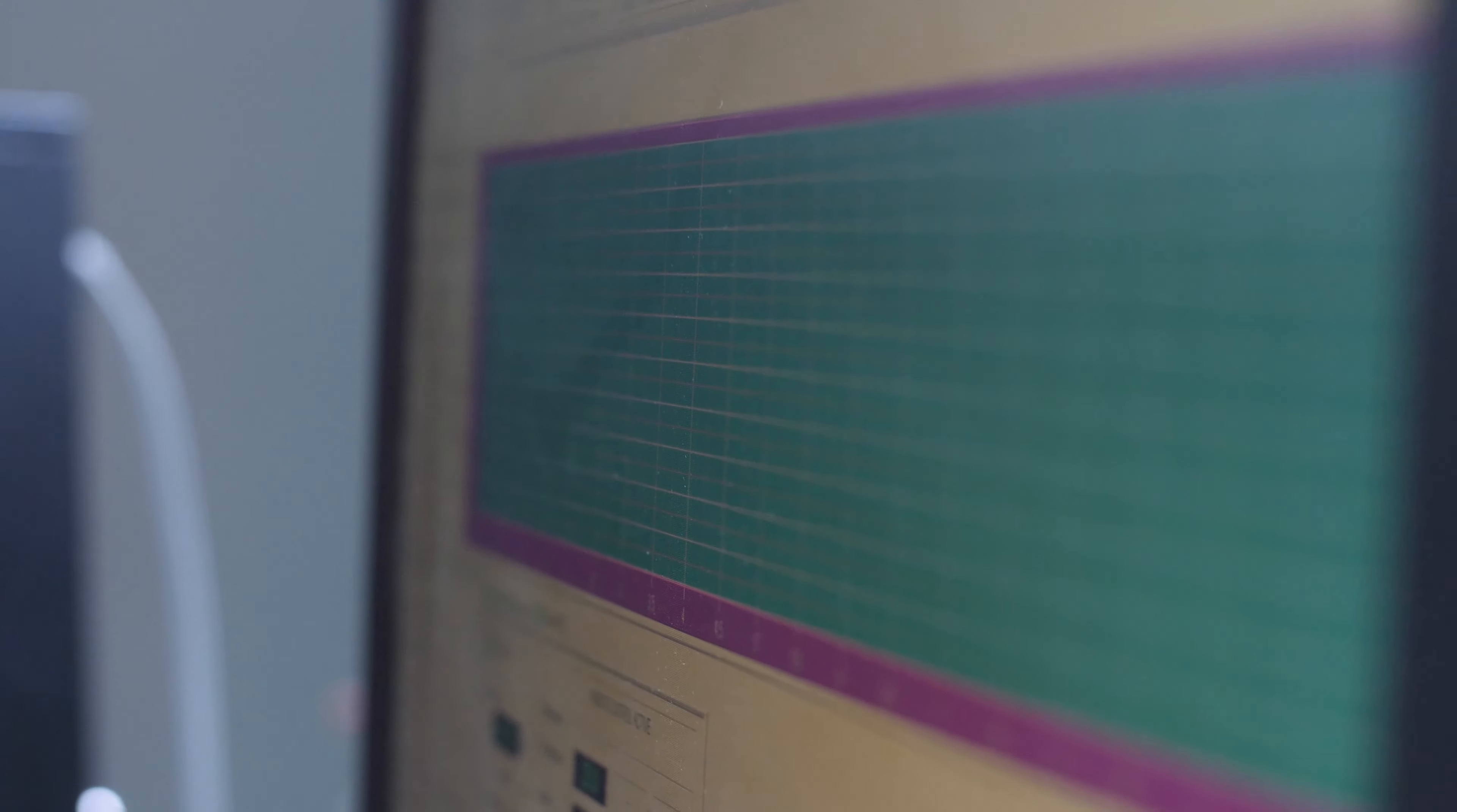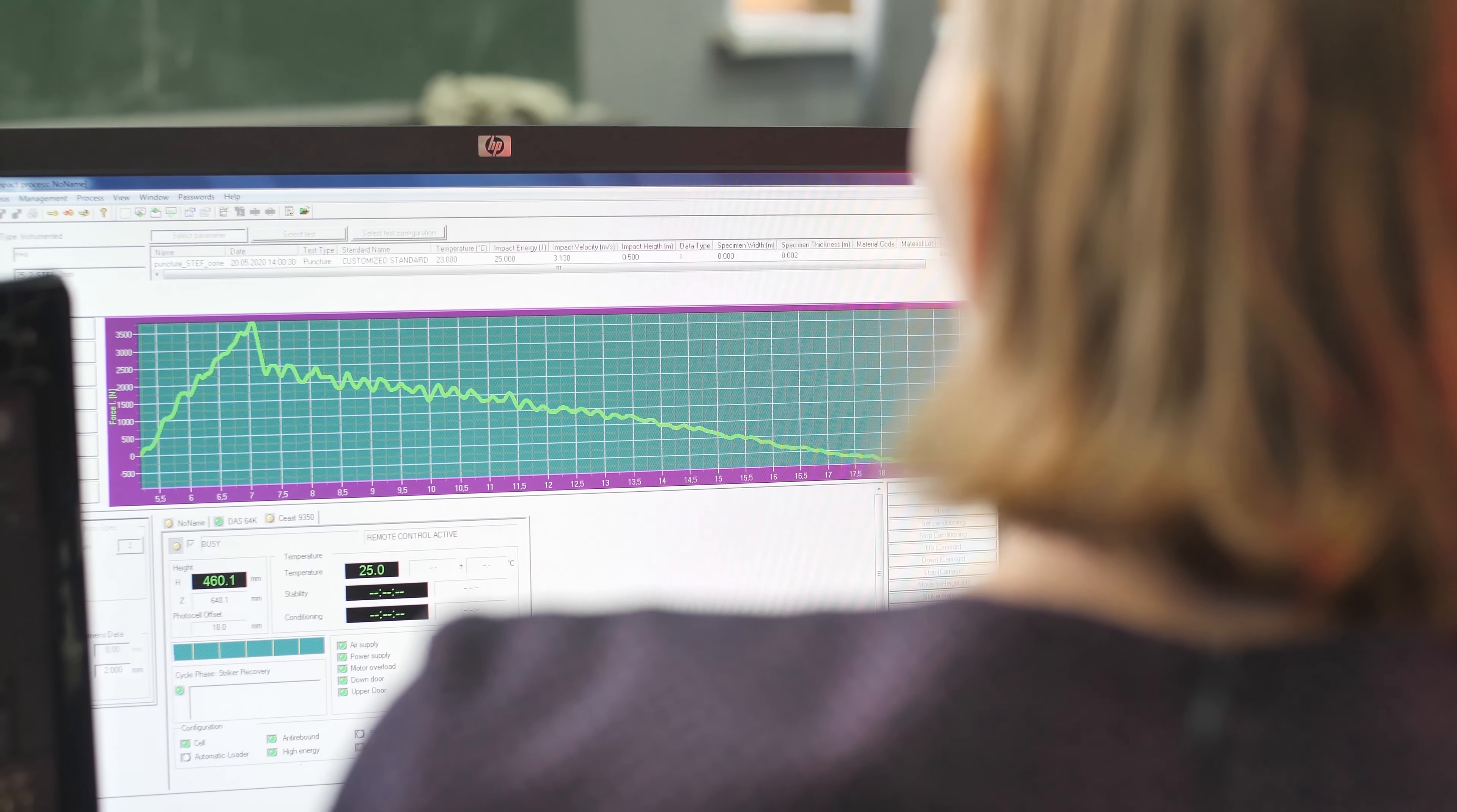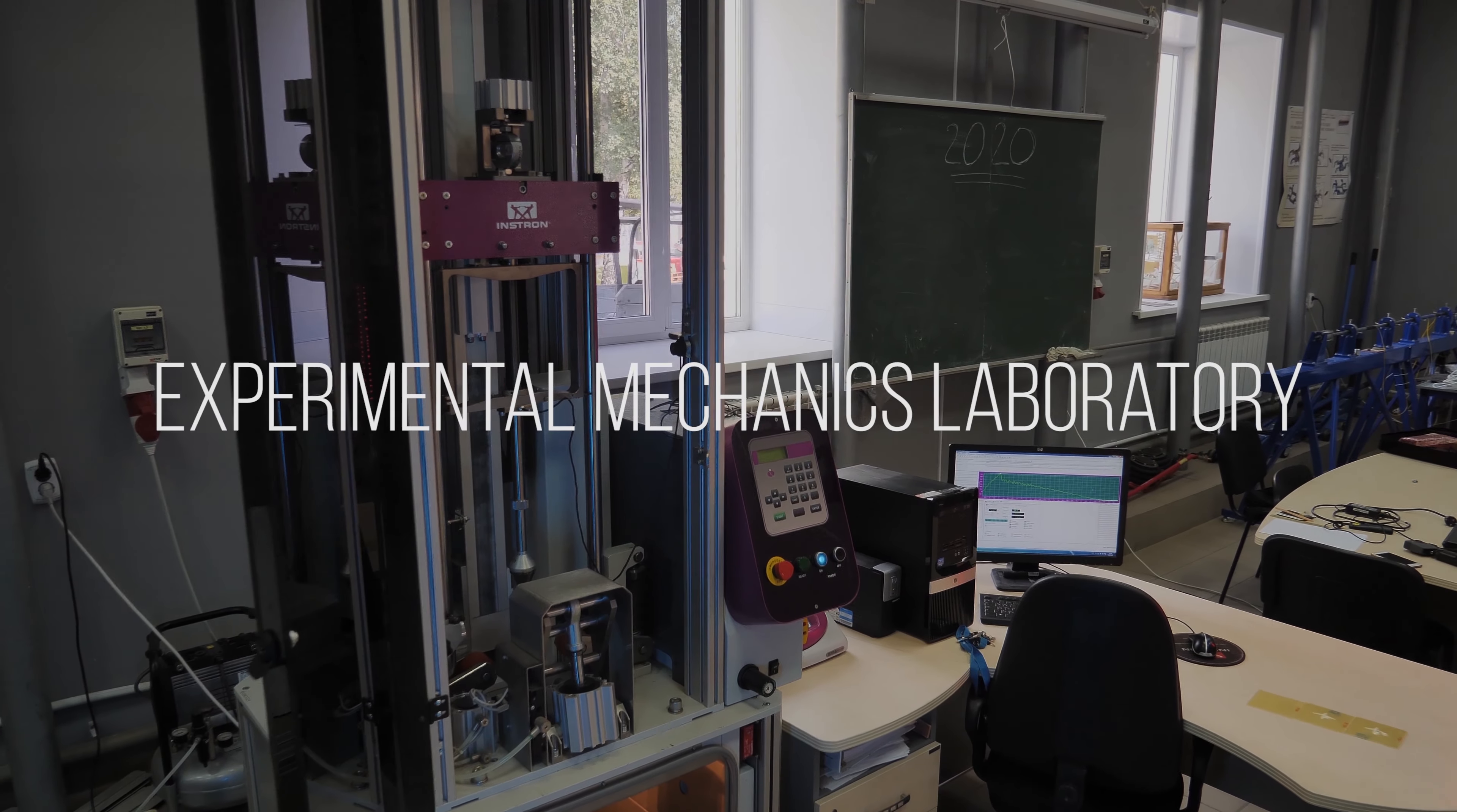The Experimental Mechanics Laboratory is a link in the production process. Mechanical testing is an integral part of development. At the first stage, the material that will be used in the product based on the tactical and technical characteristics or technical specifications is determined.